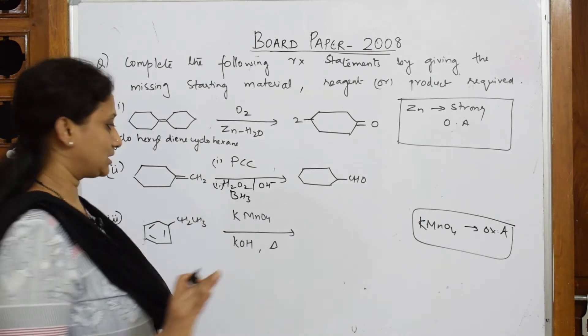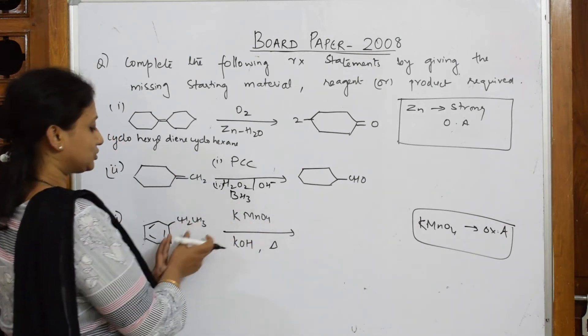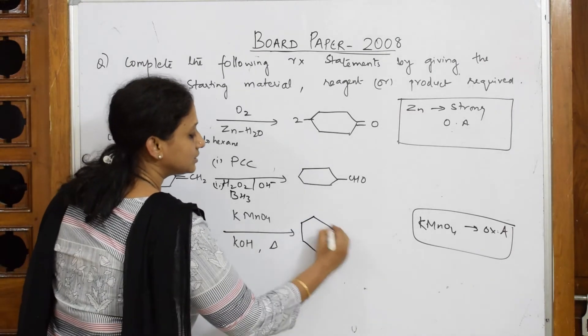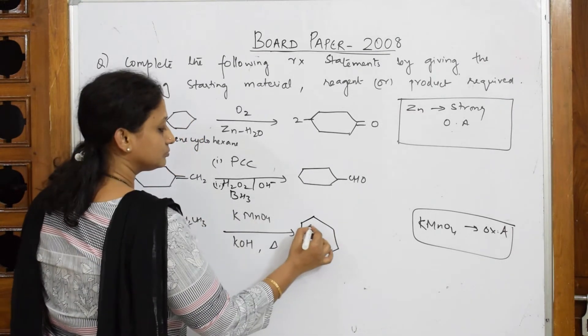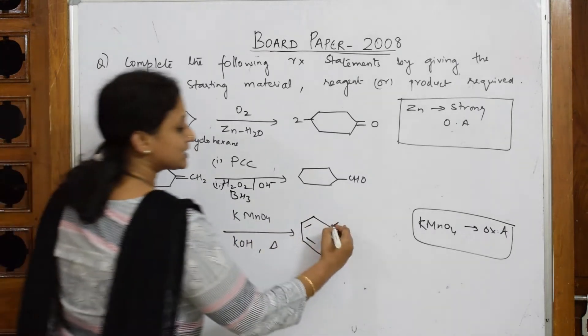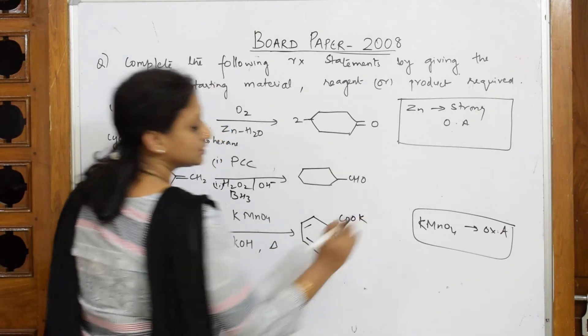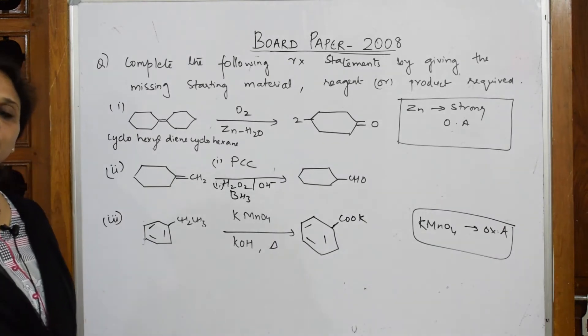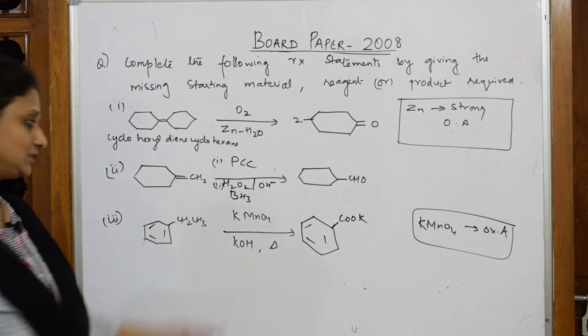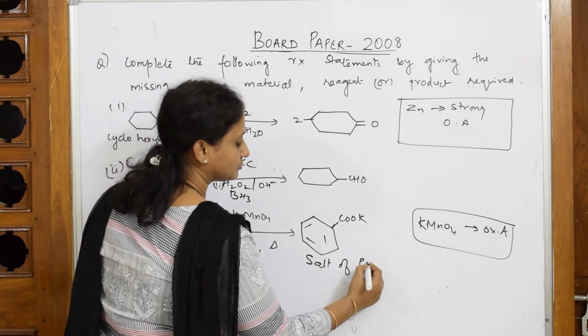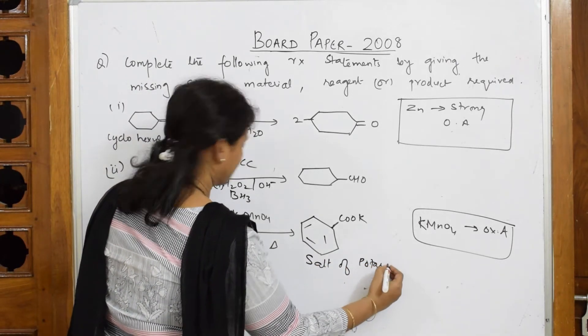First, before oxidizing this particular thing, it's going to form a salt. They have not asked the final product. What happens when this adds to benzoic acid? Simple - your alkyl group gets converted to, wherever there is this particular carbon, please write salt of potassium. So this is your salt of potassium or benzoyl.